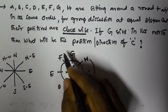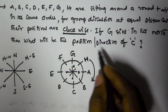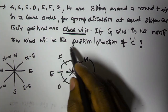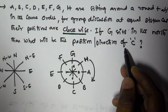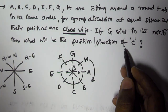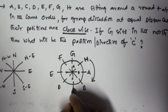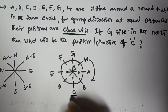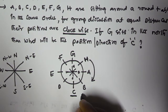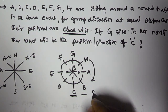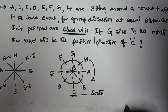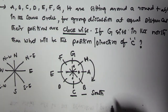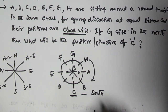So now it is asking: what will be the position or direction of C? C's direction is south. The direction of C is the south direction. So it is clear from this picture that C is in the direction of the south.